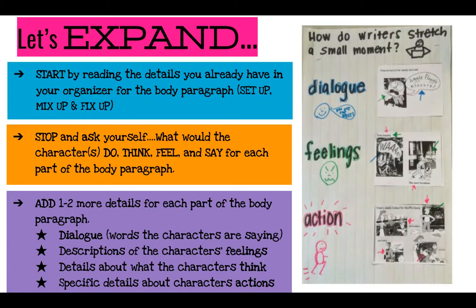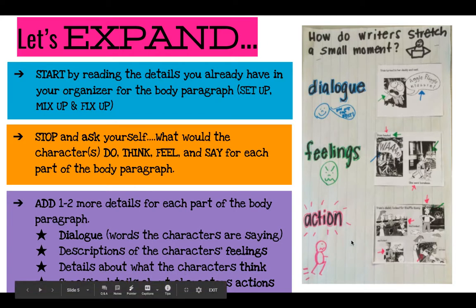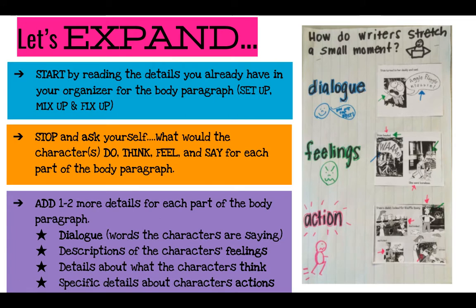I found this visual that helped me out — it says, how do writers stretch small moments? So we're going to take a little moment and put a lot more detail into it. Things we could do: you can add some dialogue — adding dialogue is adding what the character might say. Another thing is to talk about how the character is feeling, and give another sentence or two to explain what that character might feel on the inside. You might also want to say what the character is thinking, because if they express what they're thinking, that also shows feeling. And maybe we need to add a few more details about their action — if we can use some really strong action verbs, that's going to add some good details to the body paragraph.